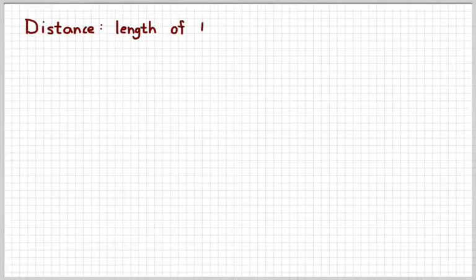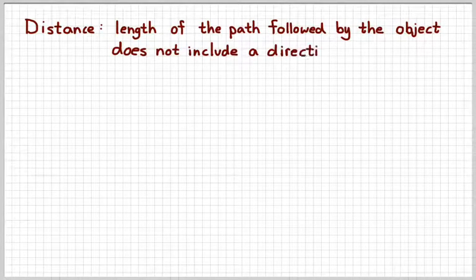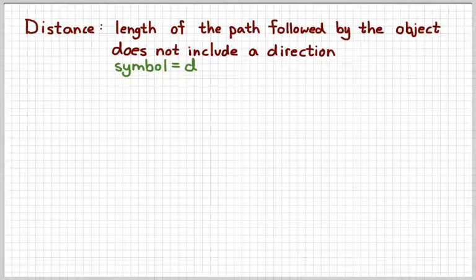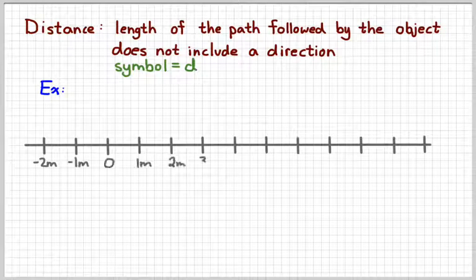Now, the term distance, on the other hand, is the length of the path that's actually followed by the object as it moves. It does not include a direction, so a distance is always going to be positive. The symbol that we're going to use for distance is a D, and we would measure it in meters just like any other length.